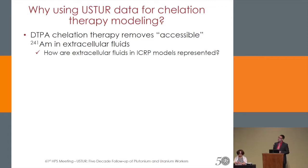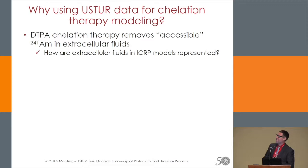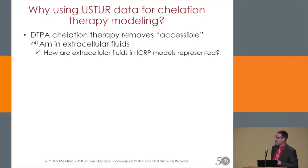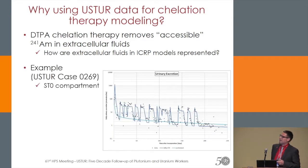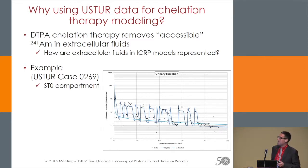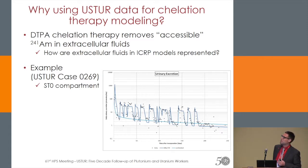I'm going to start my presentation with the questions: why do we want to use the USTUR data for the modeling? We know about DTPA chelation that it removes the accessible americium in the extracellular fluids, so we need to know how these are represented in the ICRP models. I take the case 269 data, which was a chelated case. You see the urinary data together with two models — the light blue line shows the model prediction for non-chelated, and the dark blue line shows a model prediction for chelation which takes place only in one compartment, which is the ST0, the soft tissues, meant to represent the extracellular fluids.